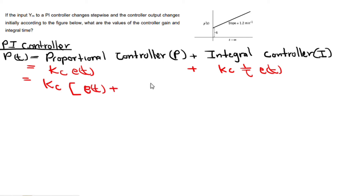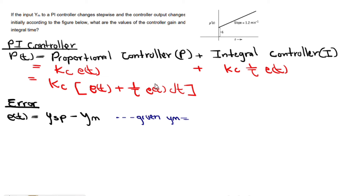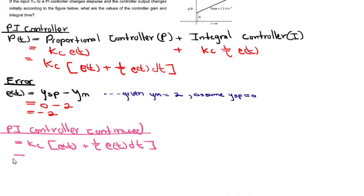We can take out the common factor kc and write: kc times [e(t) plus 1 over integral time times the integral of e(t) dt]. The error is the relationship between the set point and the measured value. In a typical feedback controller loop, there is the process itself, the measuring device, the comparator which compares ym and ysp to determine the error, the controller, the final control element, and disturbance.